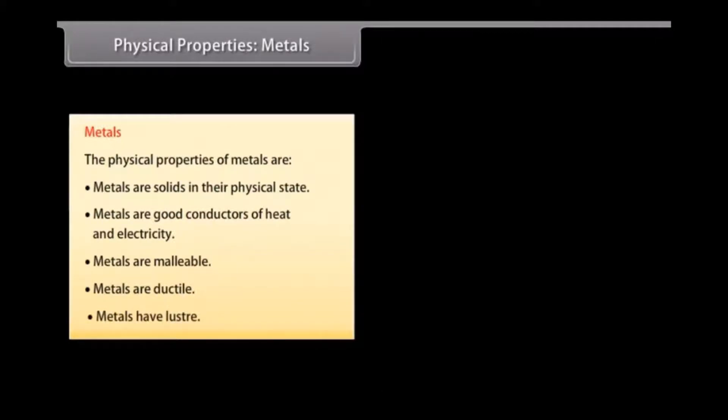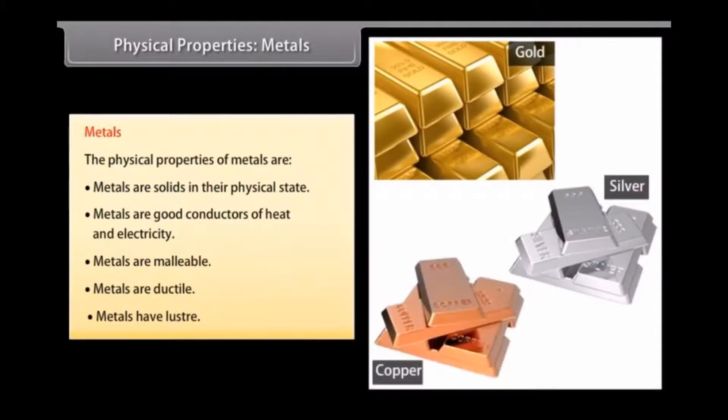Lustre: Metals reflect light from their shiny surface. They can also be polished. For example, gold, silver and copper are metals with a shiny surface and can be polished.